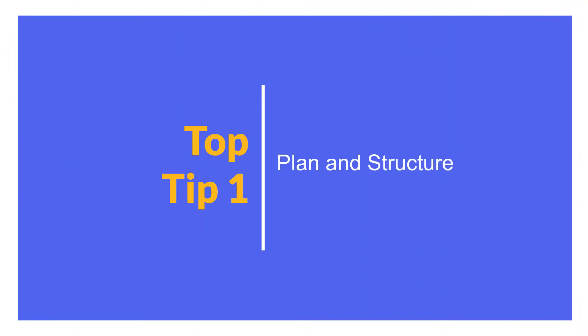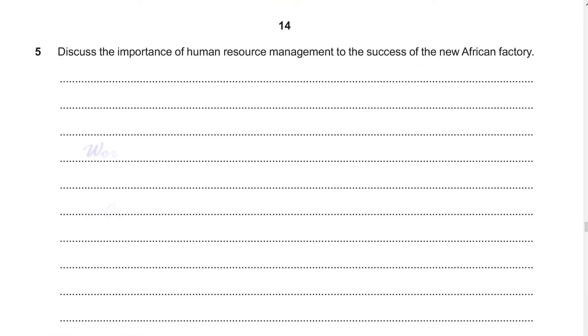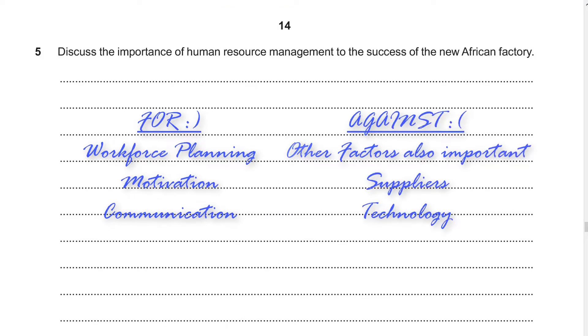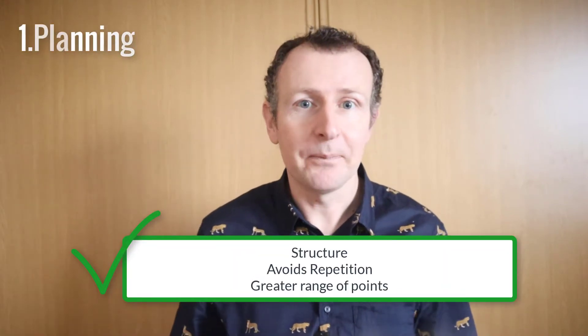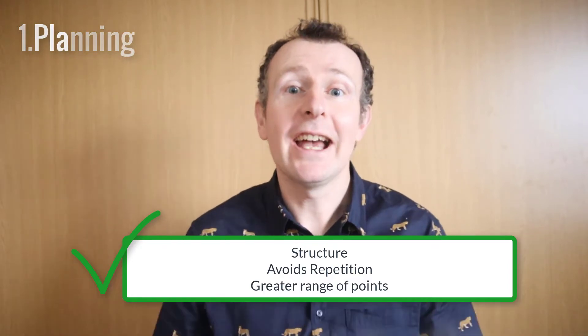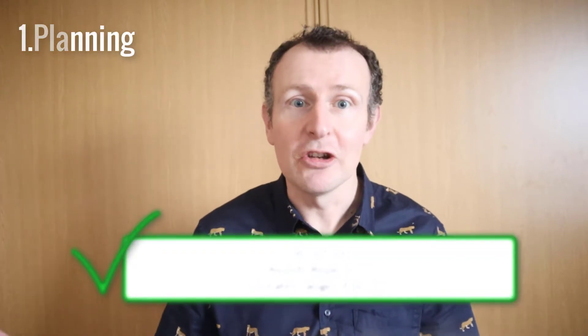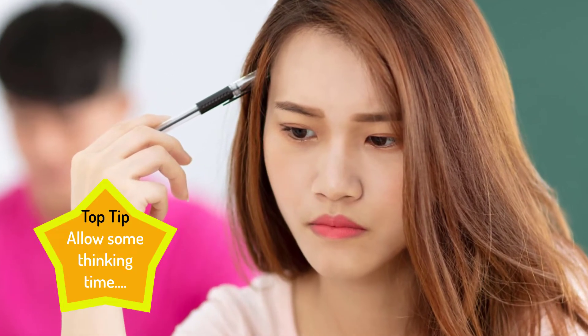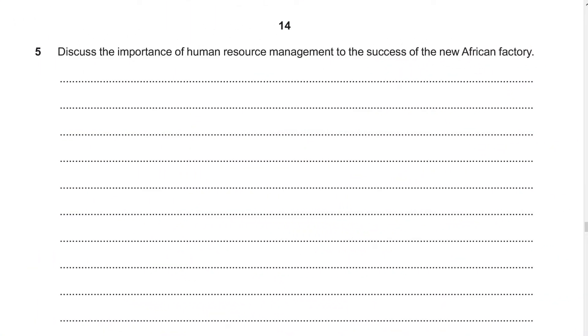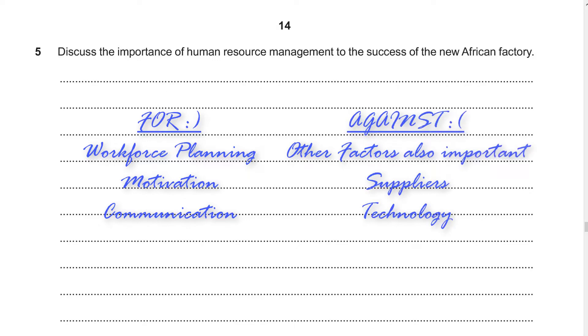So, let's get into it. Top tip one is plan and structure. Before you start, stop — make a simple plan. This could be as simple as a list of points for and against. Planning allows you to create greater structure in your essay and include a greater range of points so you avoid repetition. Thinking through your answer before you begin will also guide you to a reasoned decision in evaluation questions. As an examiner, it's pretty obvious whenever students don't plan and just make up the answer as they go along. It's reassuring when you see a student has written a short plan, because the answer is well structured and the student secures marks much more quickly and efficiently.